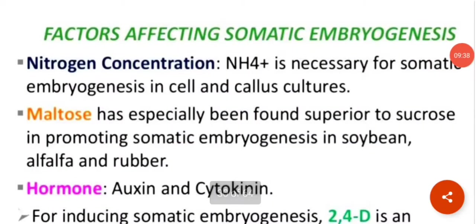What are the factors affecting somatic embryogenesis? Nitrogen concentration is very important. Maltose has especially been found superior to sucrose in promoting somatic embryogenesis — it promotes somatic embryogenesis in soybean, alfalfa, and rubber.